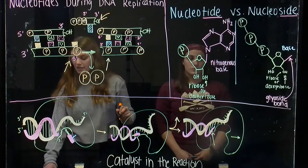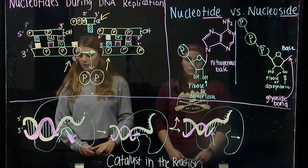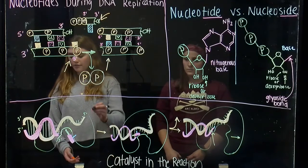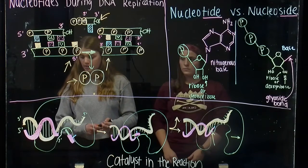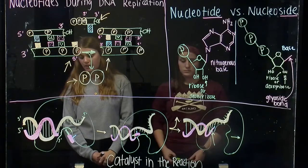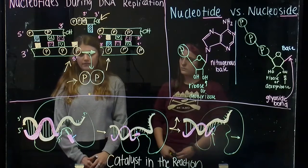The nucleoside triphosphate bonded together is energetically unfavorable. So when a phosphate group breaks off, the molecule becomes a diphosphate and energy is released. Nucleoside diphosphate is more energetically favorable than nucleoside triphosphate.